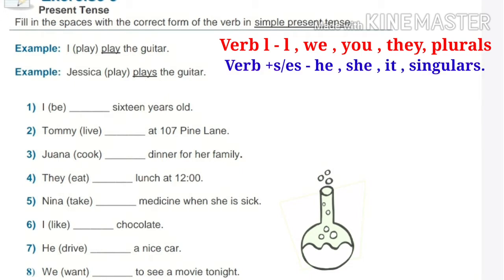And we use verb S or ES with the subjects he, she, it, and singulars. One important thing — we use B-verbs AM, IS, ARE in the present tense. Let's practice with some examples.